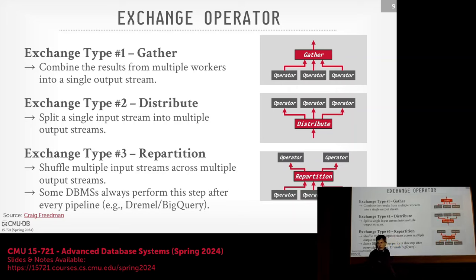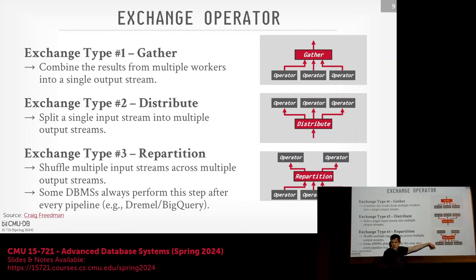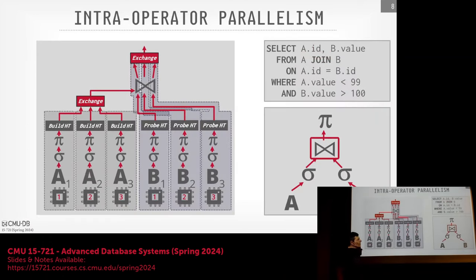A student asks about which other operators besides table scans could take advantage of this. The answer is anything — relational operators allow us to compose these things in any way we want. For example, what if there's a nested subquery above and something else wants to use the result? Repartition could have three inputs in and two outputs — the number of inputs and outputs can vary. You could also duplicate the output, for instance when reusing a nested query computation that two different parts of the query plan need.